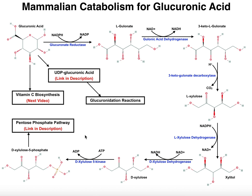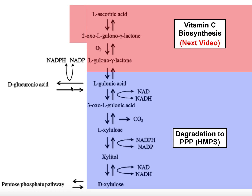I have a separate video on the pentose phosphate pathway that I'll try to remember to put in the description of this video so you can go watch that and you will see this compound. Glucuronic acid, as we'll see in the next video, has other functions. We can link it to UDP and use it in phase 2 metabolism in the liver, but another very important function of glucuronic acid is the biosynthesis of vitamin C or ascorbic acid. It's actually gulonic acid that serves as the branch point between catabolism towards the pentose phosphate pathway and towards vitamin C. That's what we're going to look at next.